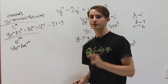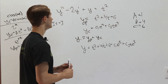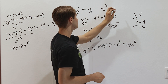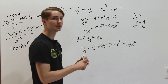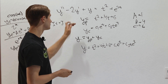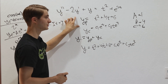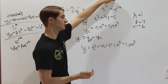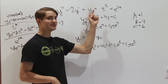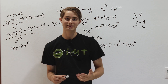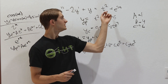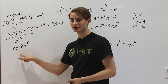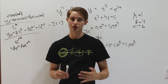For more complicated equations: if you have two things added on the right side, say t squared plus e to the 2t, you can add the guesses together. One part of the solution gives t squared, another gives e to the 2t, and adding them gives the desired result. So your combined guess would be at squared plus bt plus c plus d times e to the 2t, solving for all constants simultaneously.